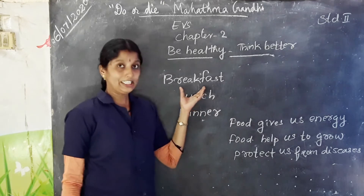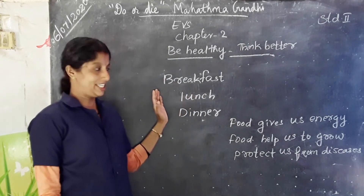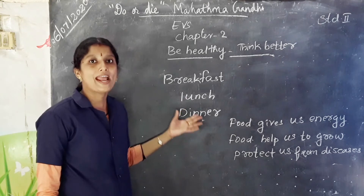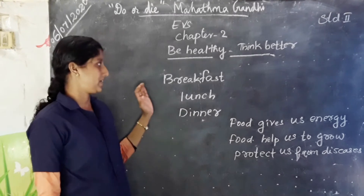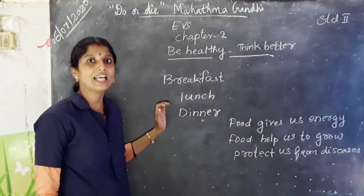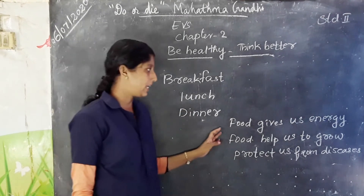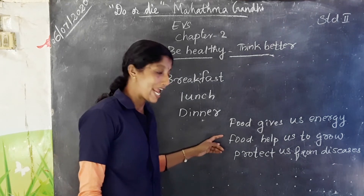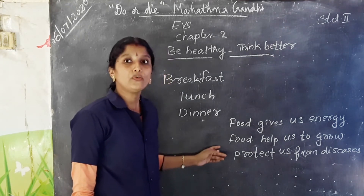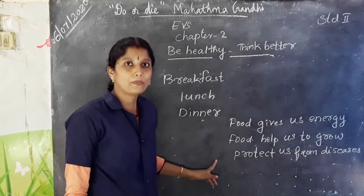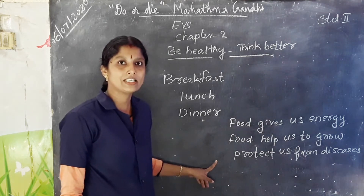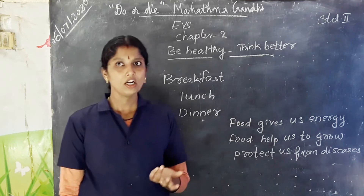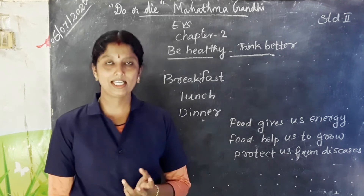We eat generally three times in a day: morning, noon and night — breakfast, lunch and dinner. Why do you eat food? Food gives us energy. Food helps us to grow. Food protects us from diseases. Food helps to build our body muscles.